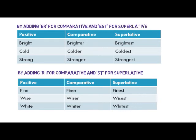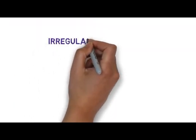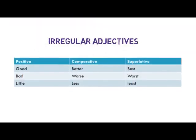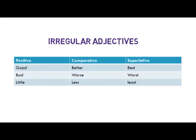These adjectives have the same form and do not change for male and female. However, there are some irregular adjectives that cannot be converted using the rules above. These words don't add any suffix — you should memorize them. For example: Good, Better, Best; Bad, Worse, Worst; Little, Less, Least.